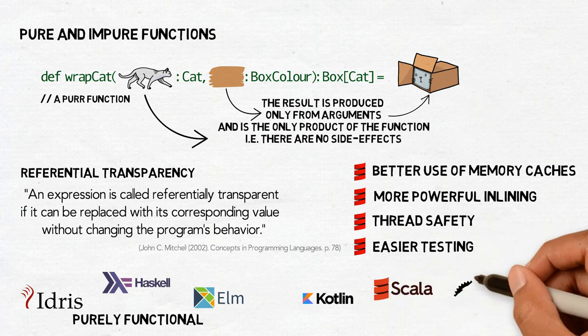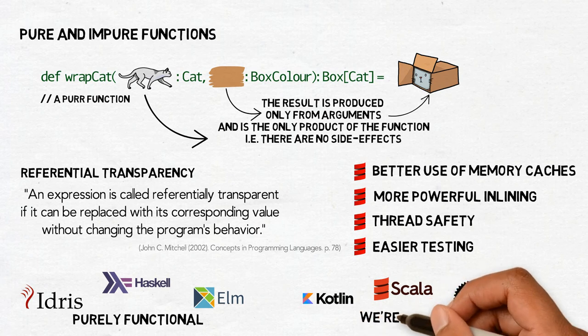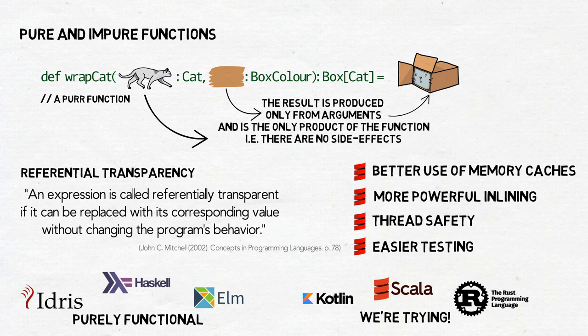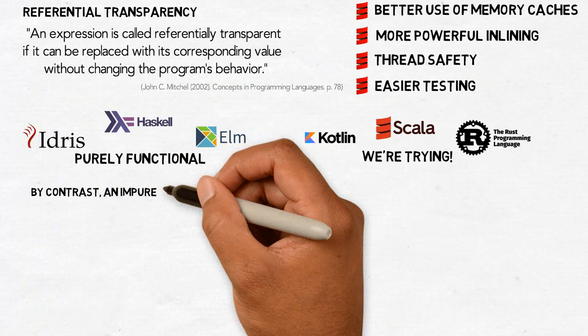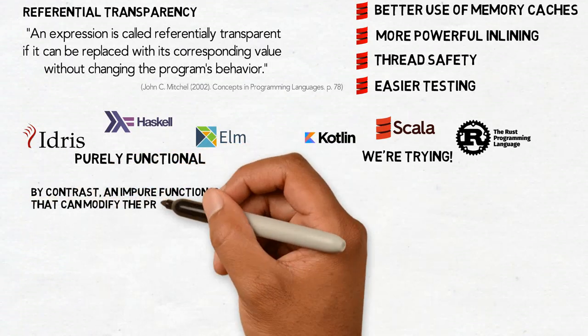In Scala, everything is an expression, even constructs such as if-else and match-case, but still there's no way to prevent modifications to the global state. And when the function does modify the program state, we say that it is impure.